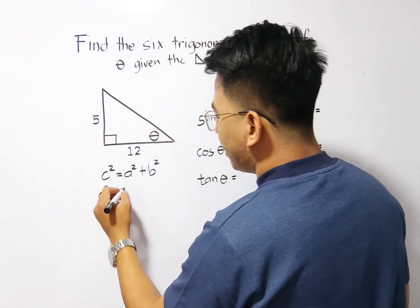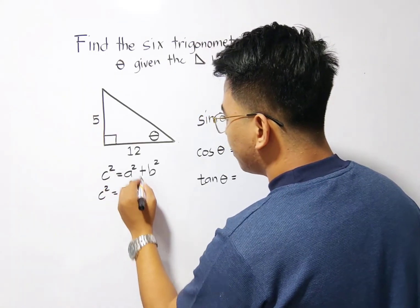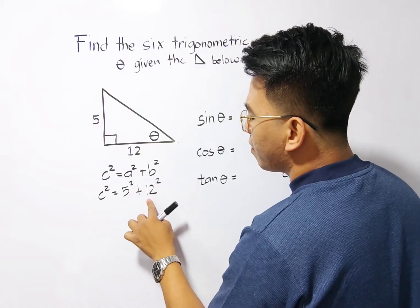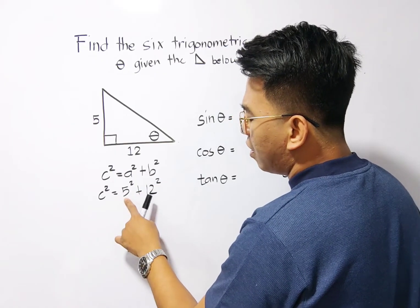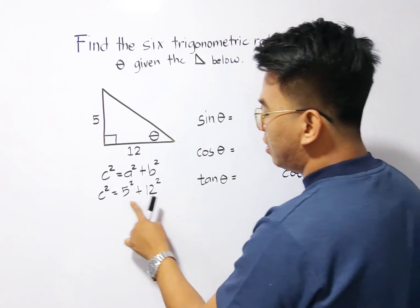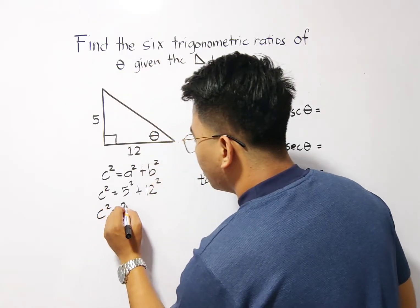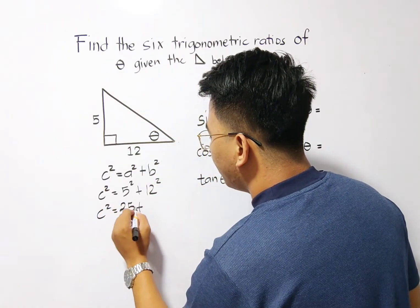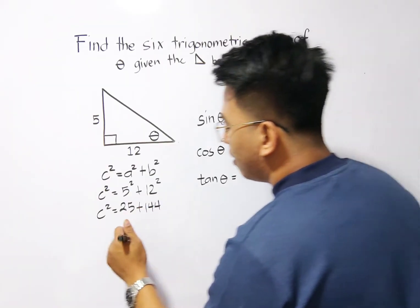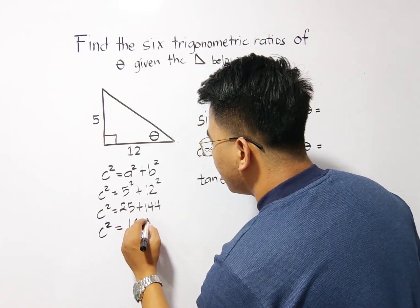And your A is 5, so we have 5 squared plus your B, which is 12. So you can interchange this one. It can be 12 squared and then this can be 5 squared. And simplifying this, this would give us C squared is equal to 25 plus 144. And add these numbers, we have C squared is equal to 169.